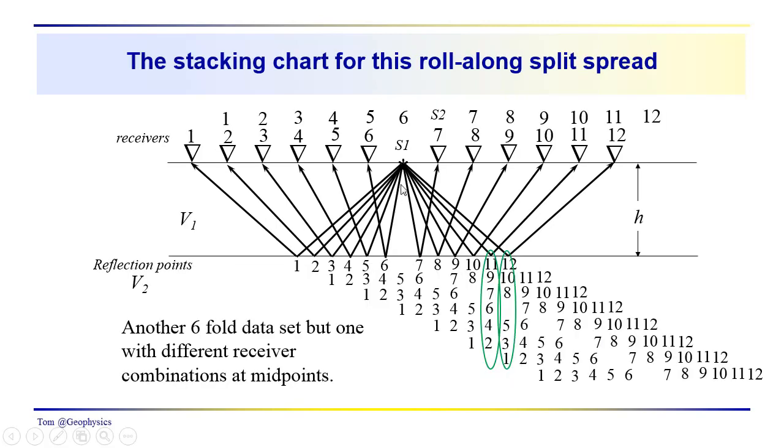So now over here we've just taken the common shot gather. We're referring to this as an asymmetrical split spread. So we have an arrangement of geophones or sensors about the source, about each source, which is symmetrical. The arrangement of geophones is symmetrical. We have six on this side, we have six on this side. We have a little bit of a gap here.